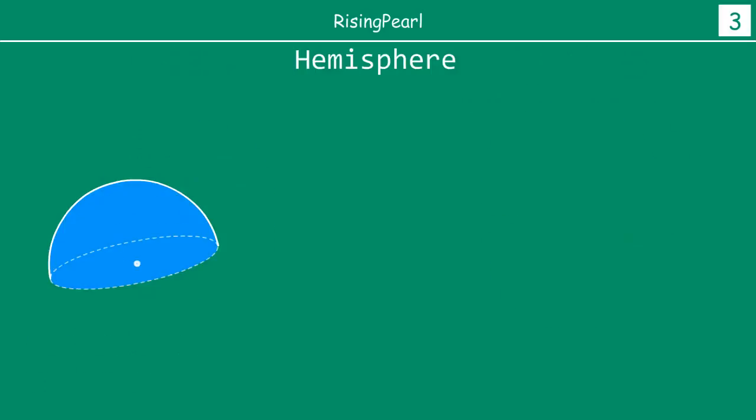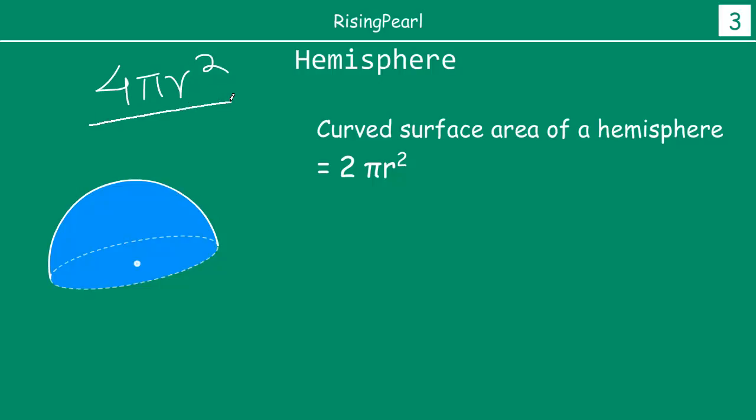So now let's take a look at this hemisphere. So the curved surface area of the hemisphere will be how much? It will be 2πr². Why? Because the total sphere was 4πr². So for hemisphere that will be half of it, that will be 2. So 4πr² divided by 2, so 2πr². This will be the curved surface area for the hemisphere.